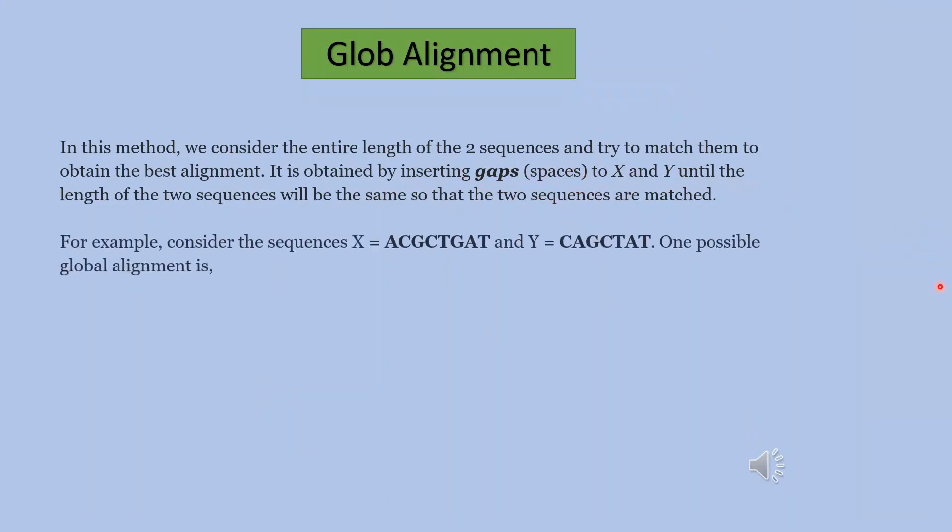For example, consider the sequences X equals ACGCTGATG and Y equals CAGCTAT. One possible global alignment is given below. A gap, C match, gap 2, A, G match, C match, T gap, G mismatch, A match, T match.